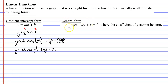Sometimes you'll be given equations in general form. An example of this might be something such as 2x minus 3y plus 1 equals 0. Both of these equations are the same — they've just replaced the a with a 2, the b with a minus 3, and the c with a 1.